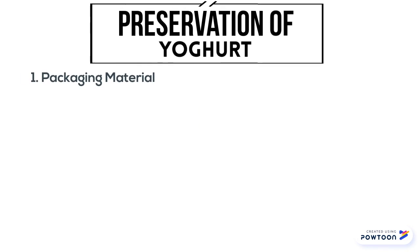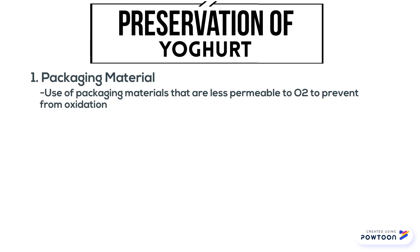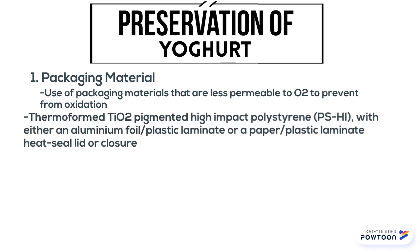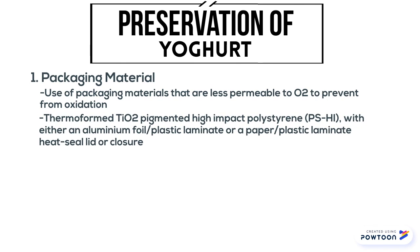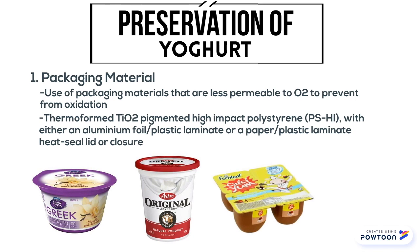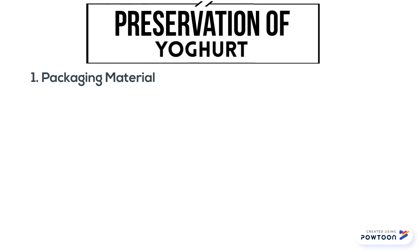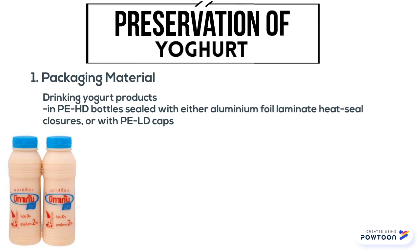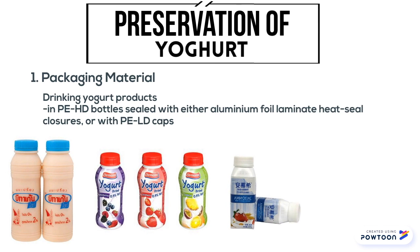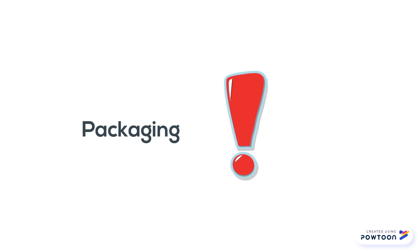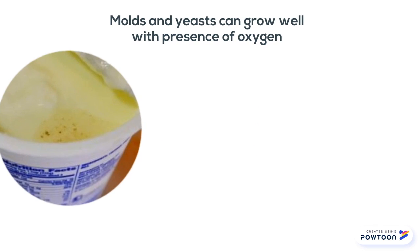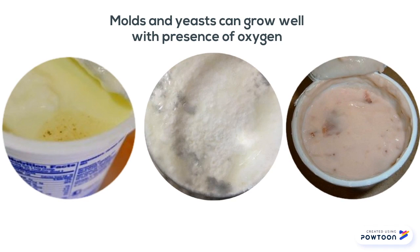Packaging material is involved in the preservation of yogurt. Manufacturers use packaging materials that are less permeable to oxygen to prevent oxidation. Examples include thermoformed titanium dioxide-pigmented high impact polystyrene with either an aluminum foil plastic laminate or a paper plastic laminate with heat seal lid. For drinking yogurt products, they are packaged in HDPE bottles with either aluminum foil laminate heat seal closures or LDPE caps. These packaging materials are very important because once oxygen contacts the yogurt, yeast and molds are susceptible to growth, leading to spoilage.